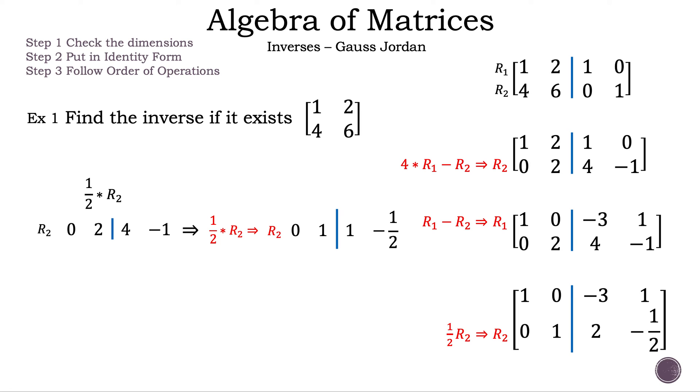Now we have our identity matrix on the left-hand side, which means the inverse matrix is on the right-hand side. So our inverse matrix is a 2 by 2 matrix where we have in row 1, negative 3 and 1, and in row 2, we have 2 and negative 1 half. And that is our answer for example 1.